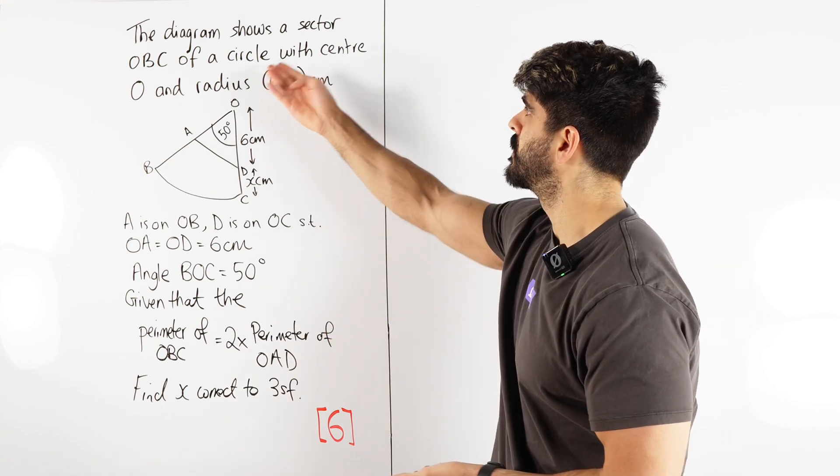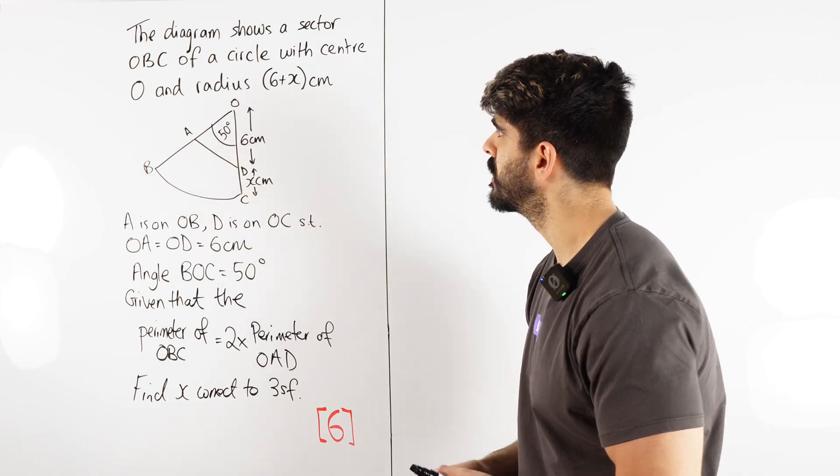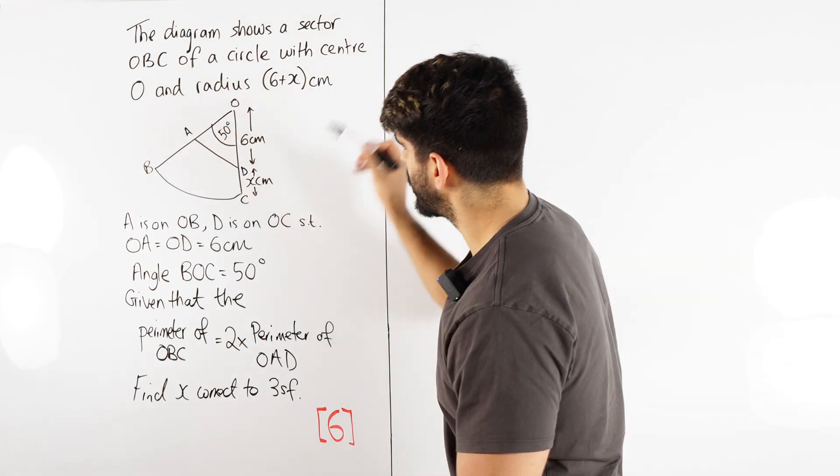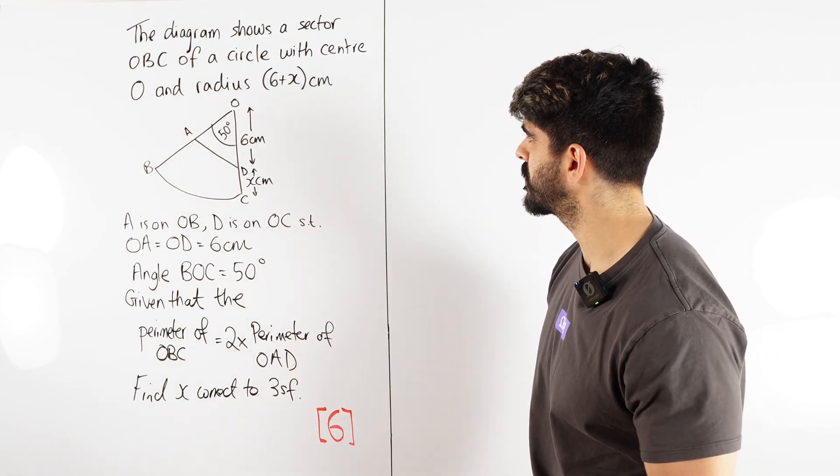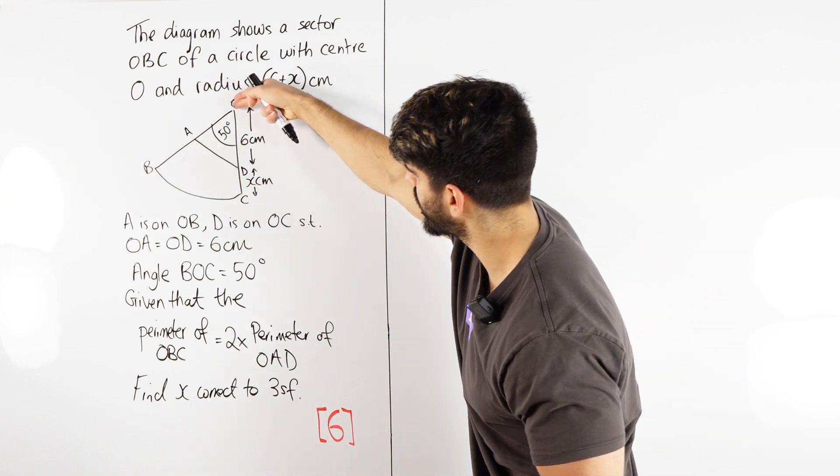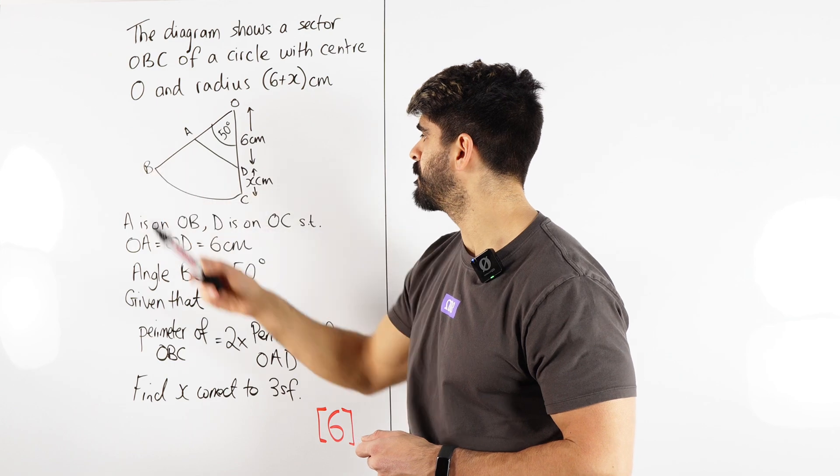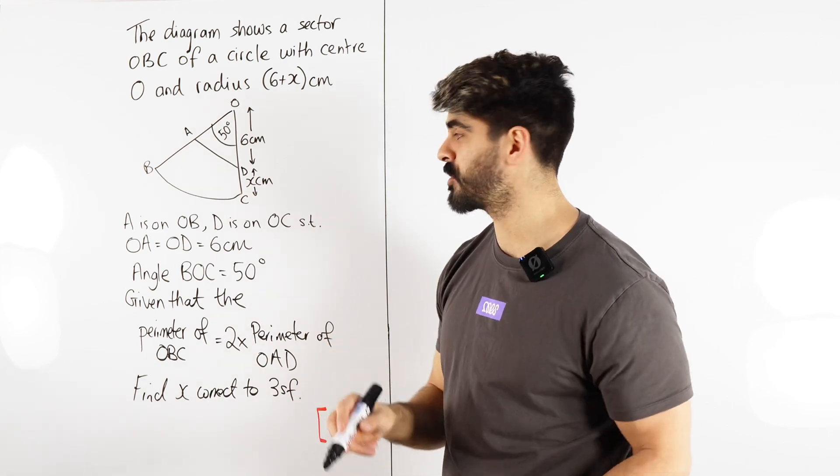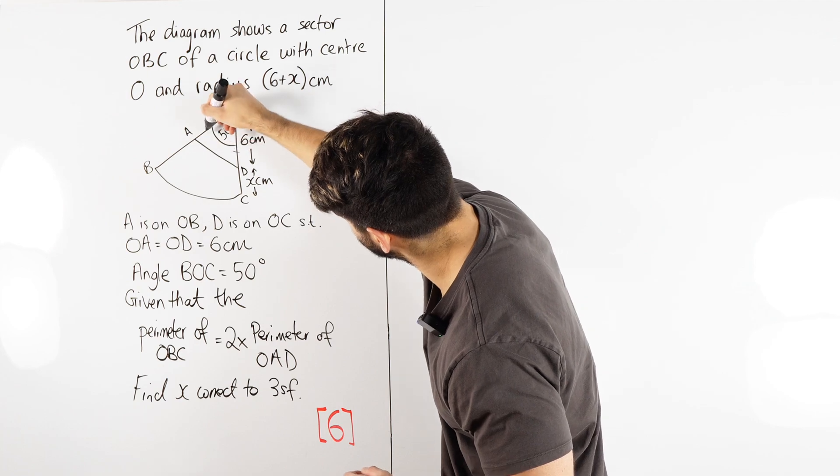Most of it's yap. The diagram shows a sector OBC of a circle. So remember, sector meaning part of a circle. We have some kind of circle here, and we've taken out a piece, a slice of cake from that circle with center O, and radius 6 plus x, which we can see in this diagram. We have this length being x, this is 6, so that whole length here is 6 plus x. It said A is on OB, D is on OC, such that they are both equal to each other, and their lengths are 6. So you can see here this OD being 6, this being the same as this.